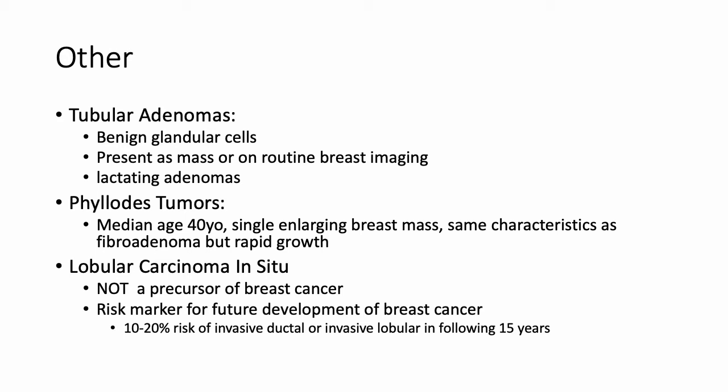The median age at presentation for phylloides tumors is 40 years old, with the usual presentation of a single enlarging breast mass. They share characteristics with fibroadenomas — firm, circumscribed, and mobile on palpation — but have rapid growth, which is the key distinguishing feature in the clinical vignette. Only about 5% of phylloides tumors will develop a propensity for local recurrence to a sarcoma capable of producing distant metastases, which is why characterization as benign or malignant is important. Lobular carcinoma in situ (LCIS) is a histologic finding that does not usually present as a mass and is usually diagnosed incidentally on breast biopsy.